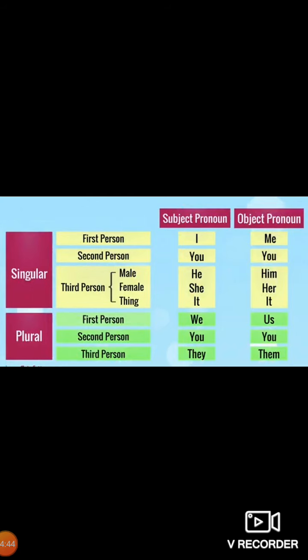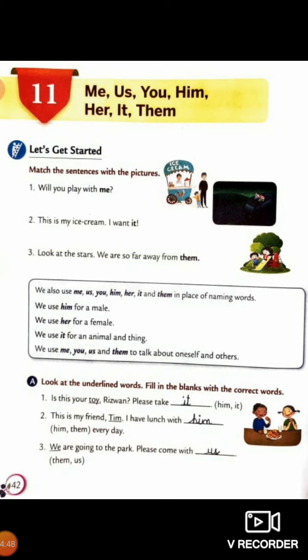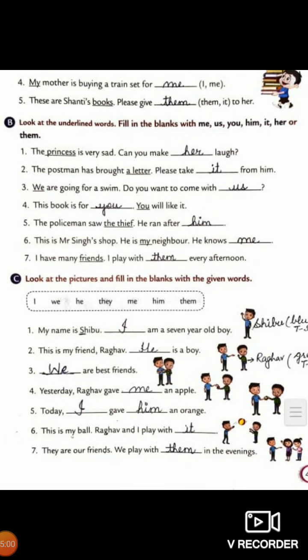This chart will also help you understand the concept. Now for the bookwork: Part A — look at the underlined words and fill in the blanks with the correct words; this is done for you. Part B — look at the underlined words and fill in the blanks with me, us, you, him, it, her, or them. Part C — look at the pictures and fill in the blanks with the given words, where object and subject pronouns are mixed, so find where to use each.